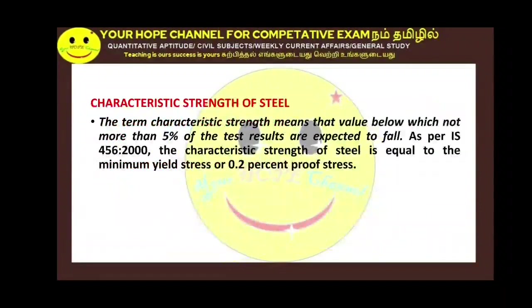The characteristic strength of steel: as per IS456, if you test 100 samples, not more than 5 will fail. The term characteristic strength means that value below which not more than 5% of the test results are expected to fail. Characteristic strength of steel equals minimum yield stress or 0.2% proof stress.